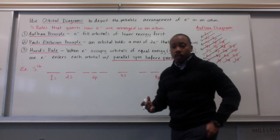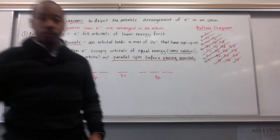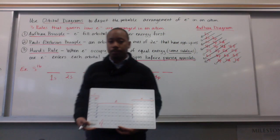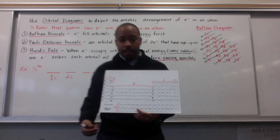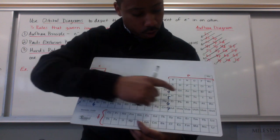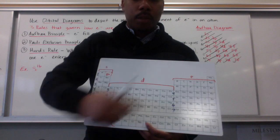Let's construct an orbital diagram for sulfur. First things first, sulfur has 16 electrons. Find it. It's here.